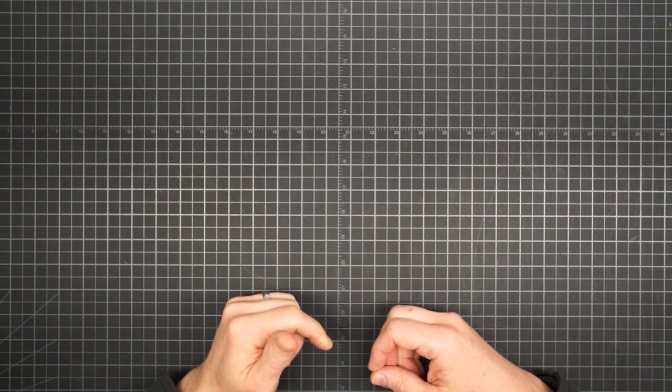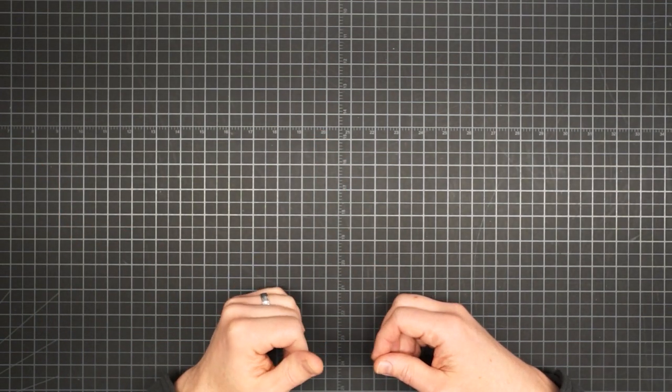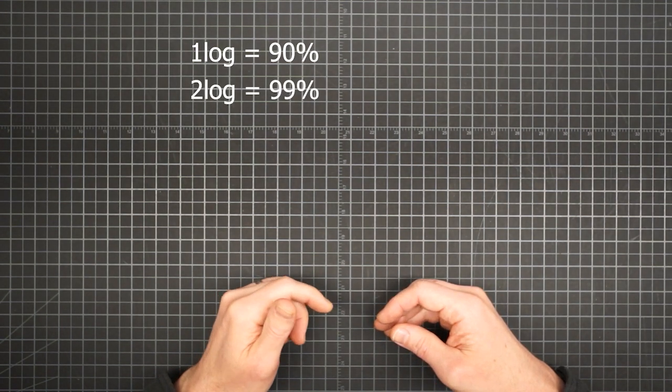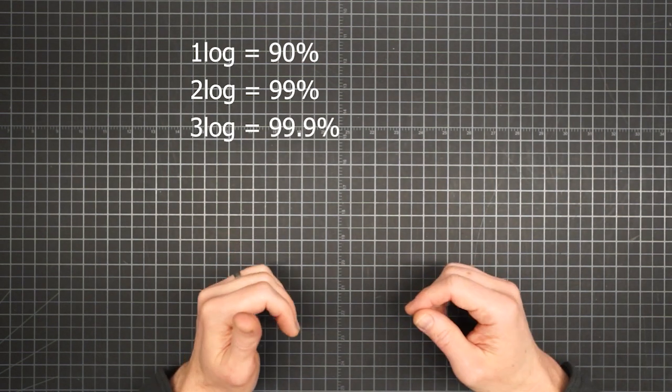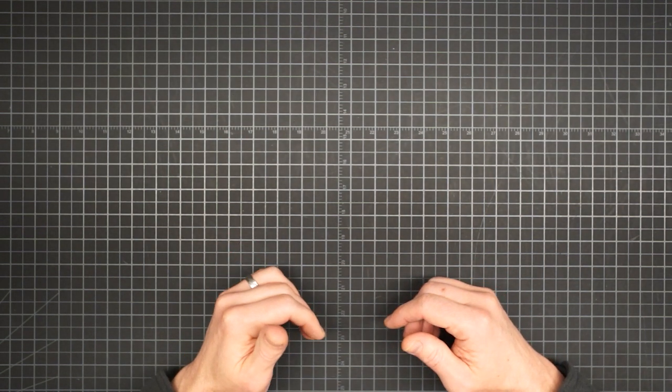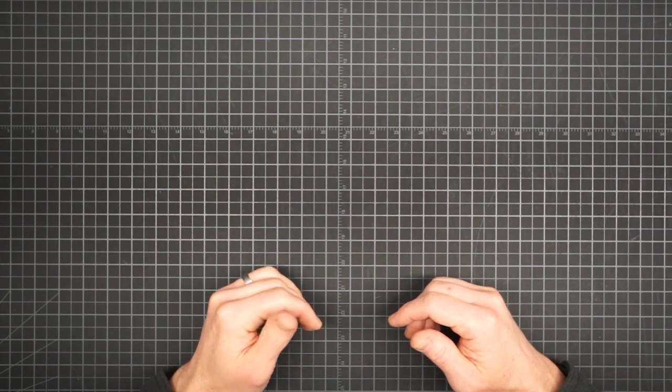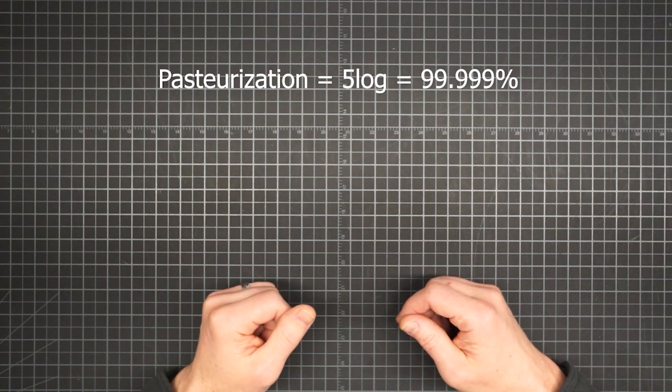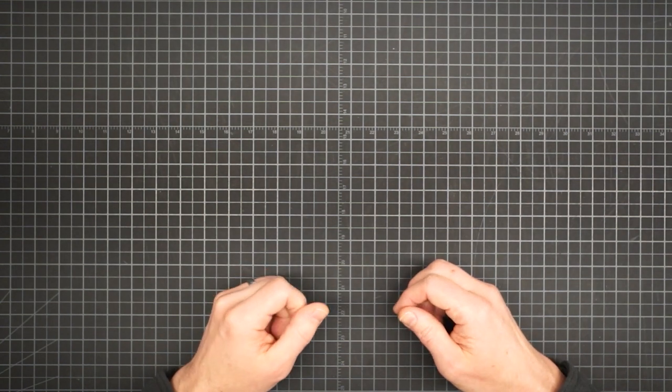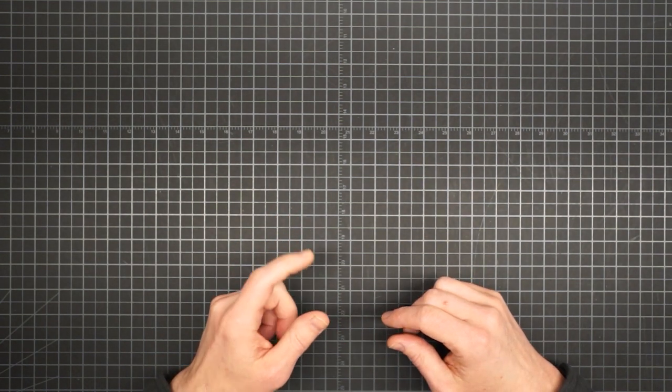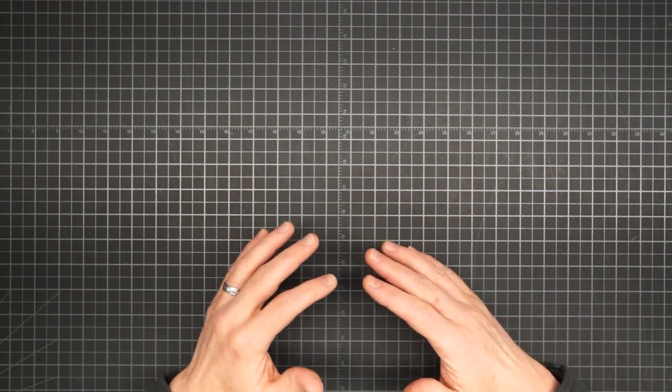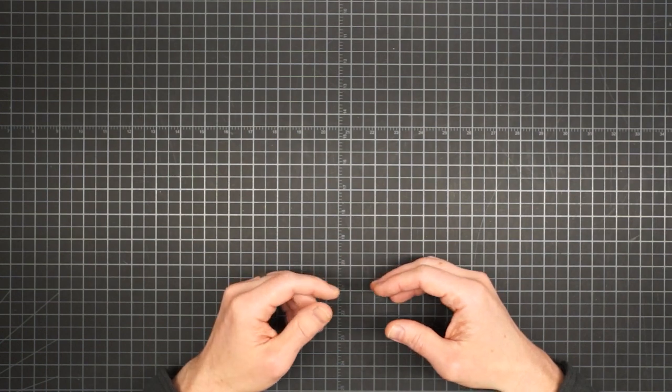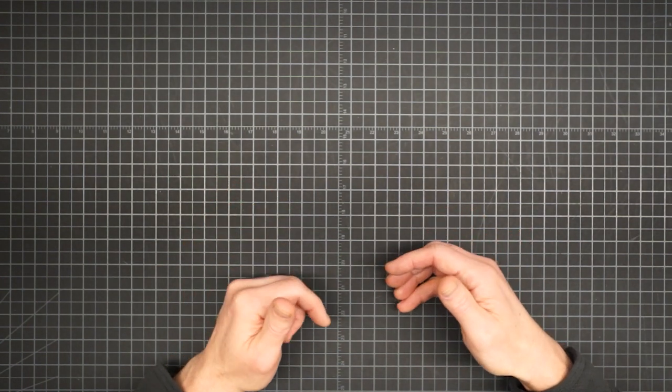In part one we talked about log removal rates. Recall that one log of removal equals a 90% reduction in pathogens, two log reduction equals 99%, and so forth. The FDA sets the reduction standard for commercial pasteurization at five log, or 99.999%. Remember also that because of the way a water pasteurization indicator works and the actual temperatures reached during field use, we were getting several orders of magnitude more than this, essentially enjoying extravagant margins of safety.